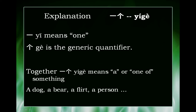So 一 and 个 together — the 一 is actually adaptable in terms of the tone. This character can change based on the tone of the next word. 个 is the fourth tone, 一 is the first tone, but when you put them together, 一 changes to a second tone: 一个, 一个 — because that flows more smoothly.